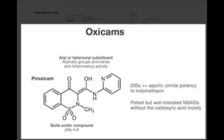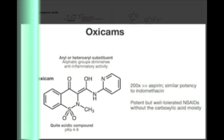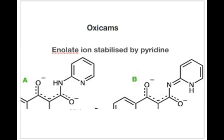The heterocycle actually functions as an electron sink. It will resonate — you actually move the electrons around and distribute them. There's resonance that can also go into this side of the molecule as well. In other words, this structure is very stable. It can very easily donate the proton. And that structure is very stable because of this heterocycle. So if you remove the heterocycle — for example, replace it with an aromatic ring — activity is really terrible.